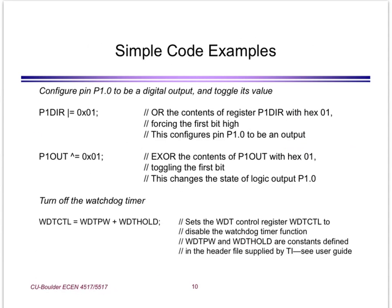Here is a very simple example. P1DIR is ORed with 0x1, which sets pin P1.0 to be in the output direction. The second line XORs P1OUT with 1, which means the value at P1.0 is toggled with this line of C code. At the bottom, we have a line of code that we will always use in our main routine to disable the watchdog timer.